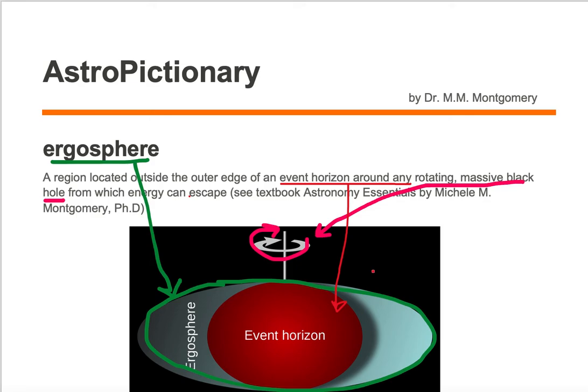If the black hole was not rotating at all, the ergosphere would disappear because the event horizon would expand outward to meet up with the ergosphere. So you would just have an event horizon — you would not have an ergosphere in a non-rotating black hole.